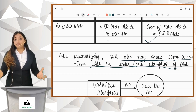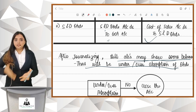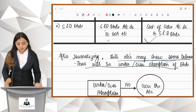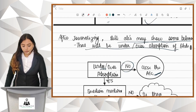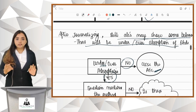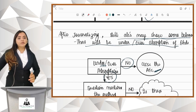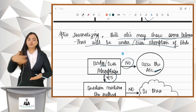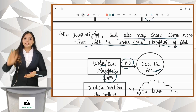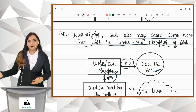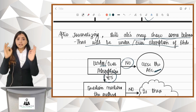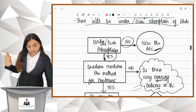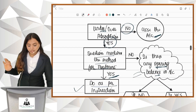You have to close the books of accounts, so the treatment of under or over absorption needs to be done. If there is no difference, that means actual equals absorbed — simply close the account. If there is a difference, read the question thoroughly. If the question says under or over absorption is to be carried forward to the next year, carry it forward using balance carried down. If the question says it is to be transferred to the Costing P&L account, do that. Follow whatever instruction is given in the question.